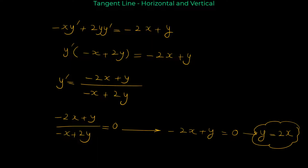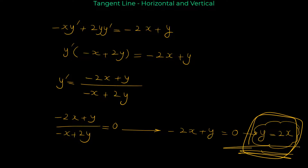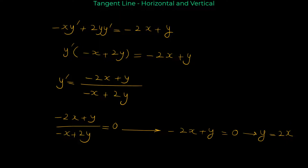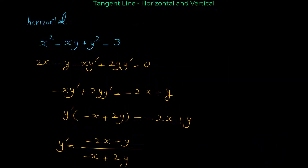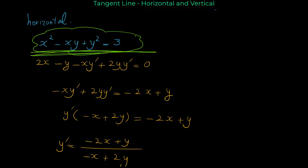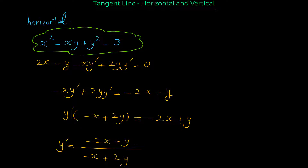With only one equation, we cannot find two unknowns x and y. But remember, we have one more equation — the original curve equation x² - xy + y² = 3. We know that x and y satisfy both equations, so we have a system of two equations: y = 2x and x² - xy + y² = 3.